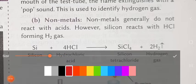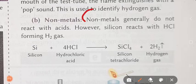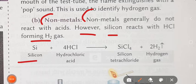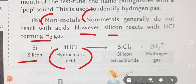Non-metals generally do not react with acids. However, silicon reacts with HCl forming H₂ gas - so silicon is the exception case for non-metals. Silicon is a non-metal. When it reacts with hydrochloric acid, it forms silicon tetrachloride plus hydrogen gas.